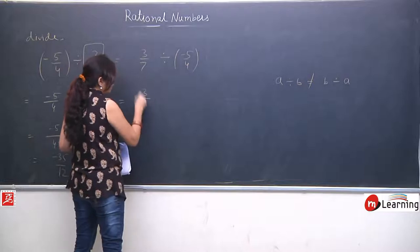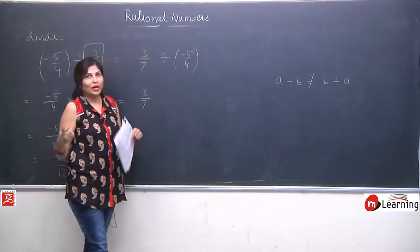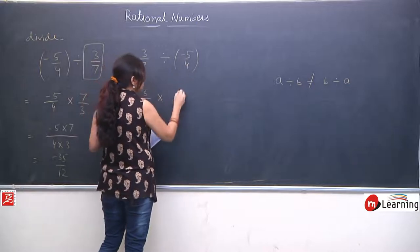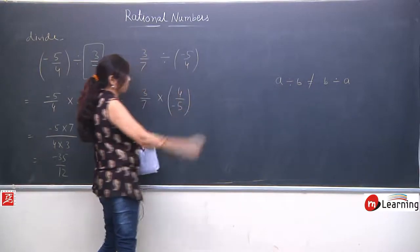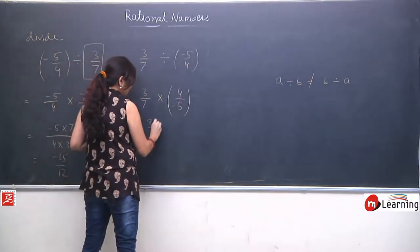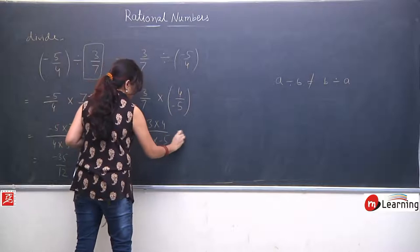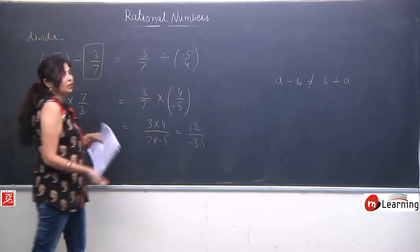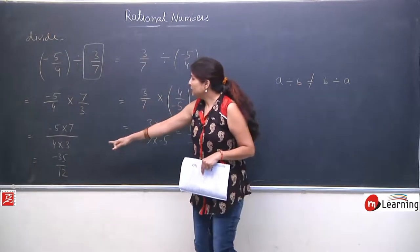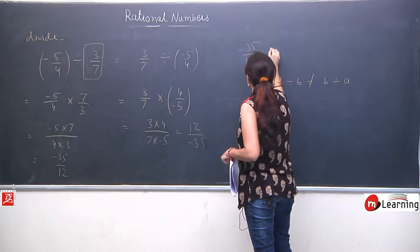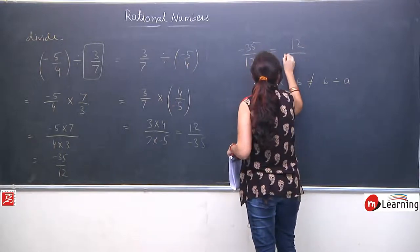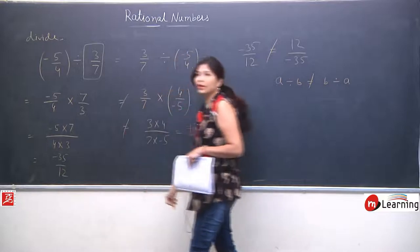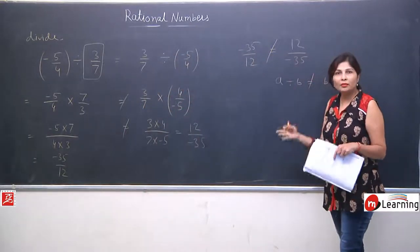Now right hand side: again divide, convert into multiplication, second term reciprocates. It gives 4 into 3 upon 7 into 5 = 12 upon minus 35. Answer is totally different — in LHS we have minus 35 upon 12, in RHS we have 12 upon minus 35. These are not equal — it is not verifying. These two terms never will be equal.